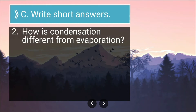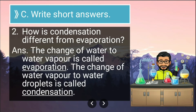Second short answer: how is condensation different from evaporation? The change of water to water vapor is called evaporation, and the change of water vapor to water droplets is called condensation. The small droplets you find on leaves in the morning are an example of condensation.